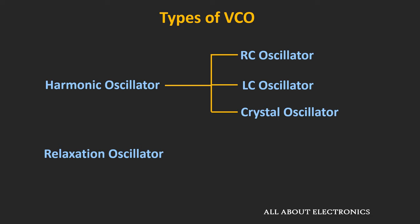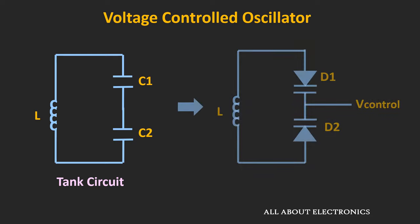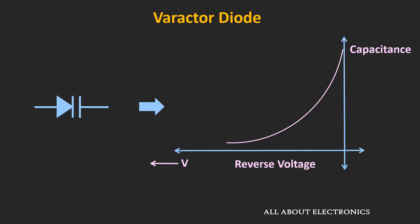Theoretically, any harmonic oscillator can be converted into a VCO. For example, instead of tuning the resistor or capacitor manually, if any of them is replaced by a voltage-controlled element, then it can be used as a voltage control oscillator. For instance, in the tank circuit of the Colpitts oscillator, if the capacitors are replaced by varactor diodes, then it can be used as a VCO. If you followed the previous video on the varactor diode, you know that it acts as a variable capacitor — as we change the applied reverse bias voltage across the diode, the capacitance changes, and by changing this reverse bias voltage, we can change the oscillator frequency.